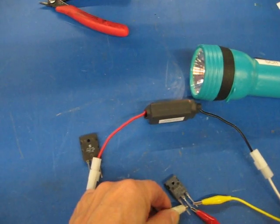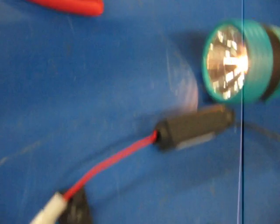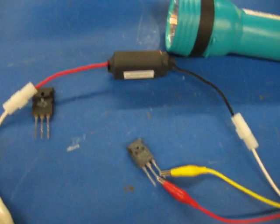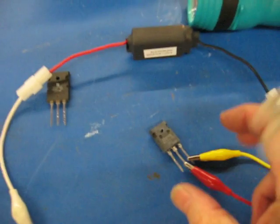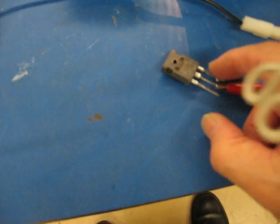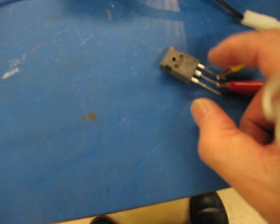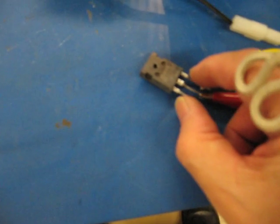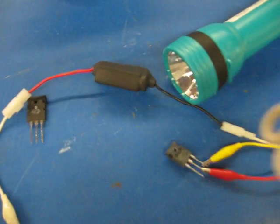And if you remove the lead it will still remain lit because there's a charge on that gate. You can turn it off by putting your finger between the source or the emitter and the gate. It turns it right off.